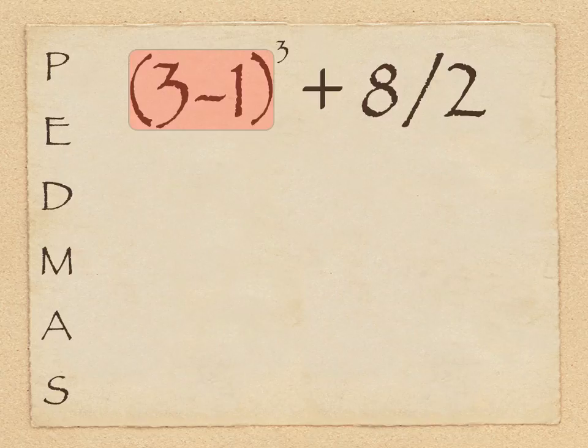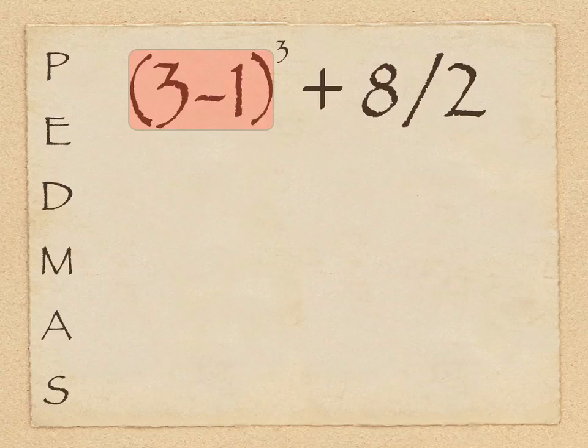So this time there are parentheses. We can see that 3 minus 1 is inside the parentheses. And you might say to yourself, well that's subtraction, and subtraction is at the end of PEDMAS, and that's not what I should be doing. But because it is inside the parentheses, that is the first step that we must take. So identify that, and then we're showing that 3 minus 1 is indeed 2.